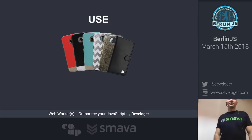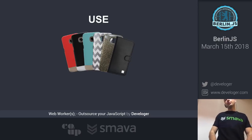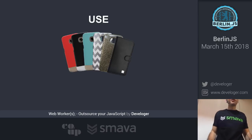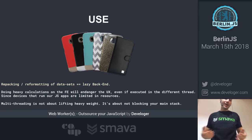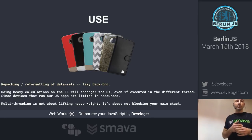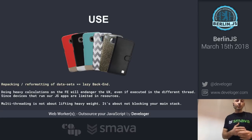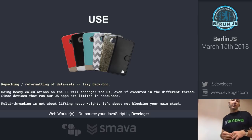What are the use cases? This is kind of a topic in itself. If you want to move unresponsive code to the web worker — please don't. It's just like putting trash under the carpet; eventually it will catch up with you. Repacking or reformatting data sets is usually a lazy backend problem, so don't solve it on the front end. Even if you elevate it to some application state like Redux or MobX and do the heavy work inside the worker, it's still the wrong approach.